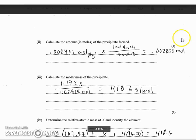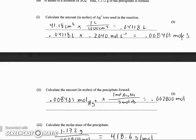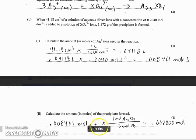And then carrying that over, calculate the amount in moles of the precipitate formed. Well, I have to go back to my balanced equation. I know my moles of Ag, 0.008401. And when I look at my equation, I see that I get one mole of the product for every three moles of Ag.